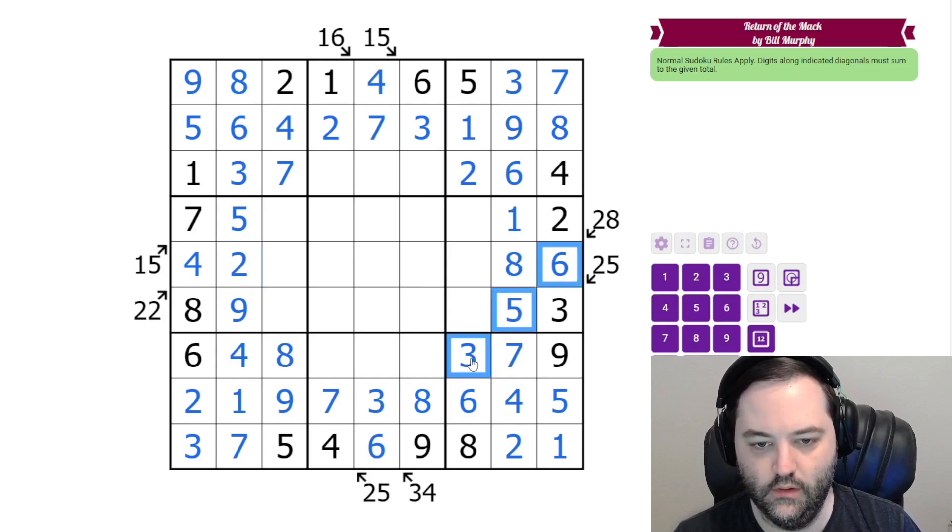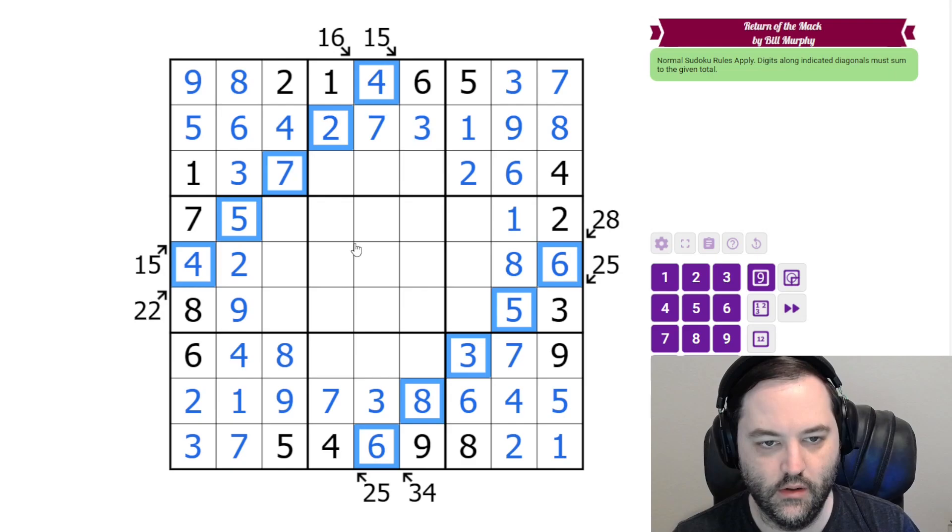And that's all the clues done. We didn't actually have to use these, but we can just check to see that they are correct. So four plus five is nine plus seven, 16, 18, 22. And 11, 14, 22, 28.